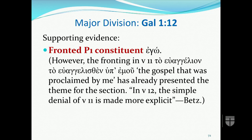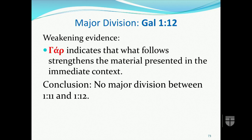In contrast, the support for a division at 1:12 is weaker. The sentence does begin with a fronted P1 constituent 'ego,' but the fronting in the previous verse of 'to evangelion to euangelion hupemou' has already presented the theme for the section. Even Betz observes that in verse 12, the simple denial of verse 11 is made more explicit. Also, whereas no overt connective is found in 3:1, 'gar' is used in 1:12, indicating that what follows strengthens the material — meaning even if it introduces an embedded section, it's still closely connected by 'gar' to what precedes.